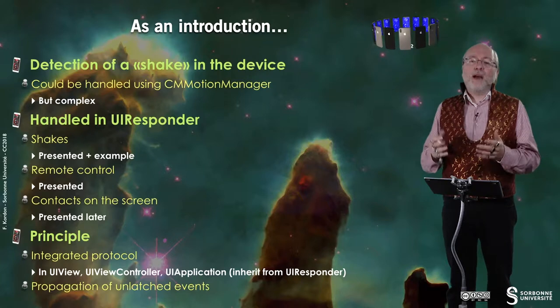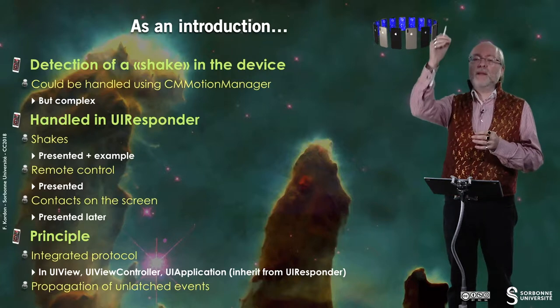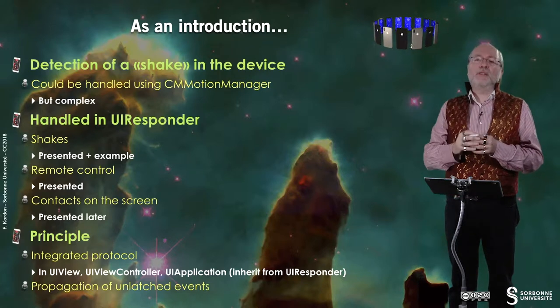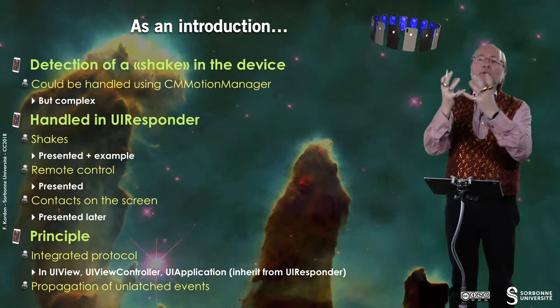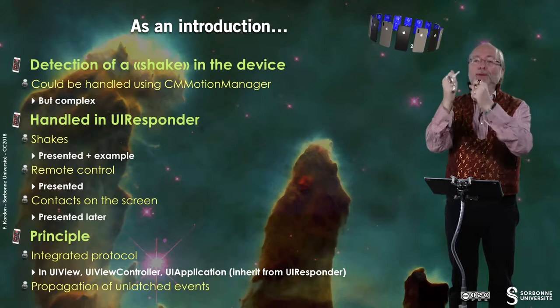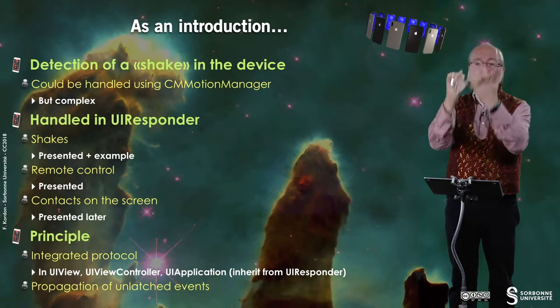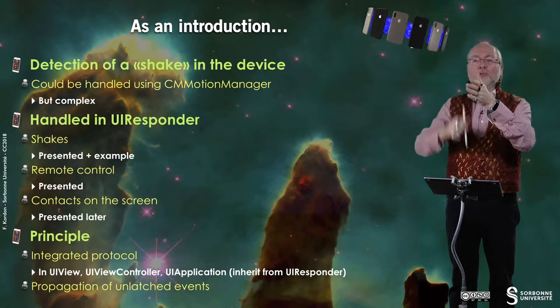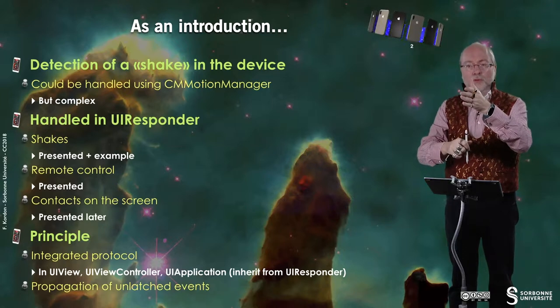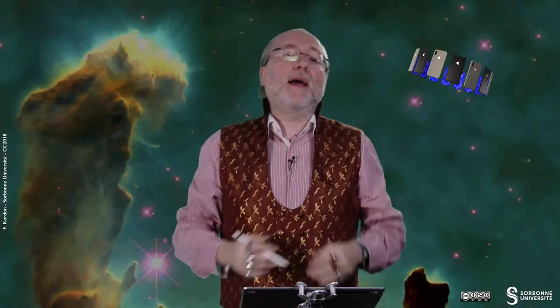When an event is caught by a given view, you can associate actions to it. Otherwise it continues propagating up, and if it reaches the main window, then it's dropped.